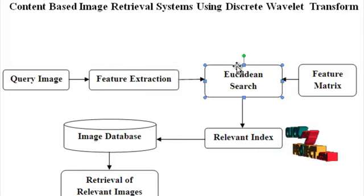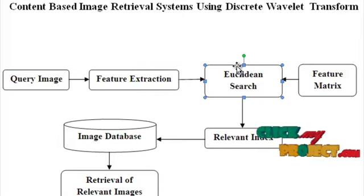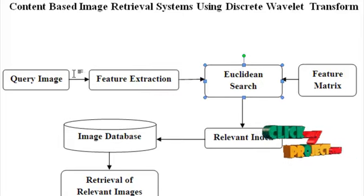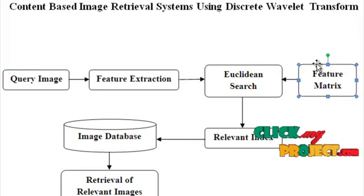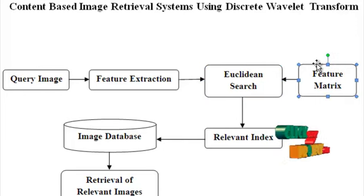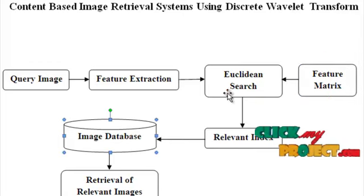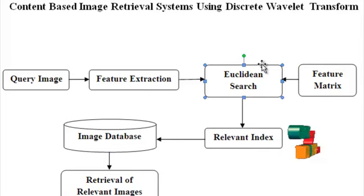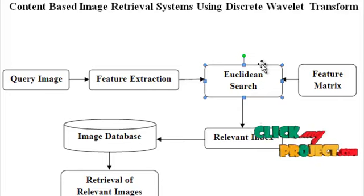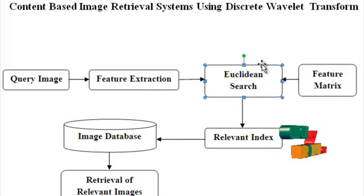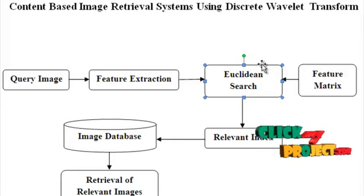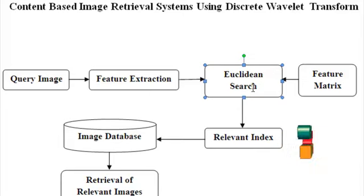Next is the Euclidean search block, which has two inputs. One is the feature vector from the query image selected by the user, and the other is the feature matrix — the concatenation of feature vectors for all images available in the database. Inside this block, we compute the Euclidean distance for the query image against all images in the database. Images considered relevant are those having the nearest distance value to the query image.